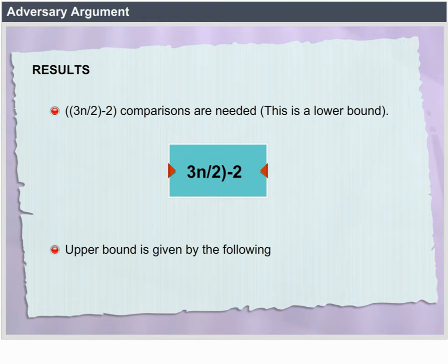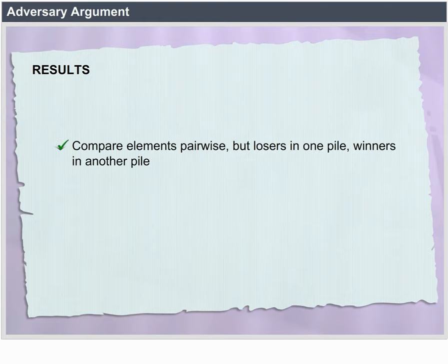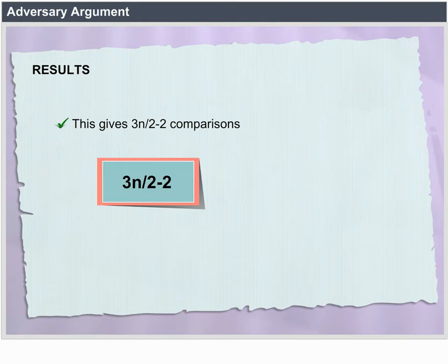The upper bound is given by the following: compare elements pairwise, put losers in one pile and winners in another pile, then find the max of winners and min of losers. This gives 3N/2 − 2 comparisons. The algorithm is optimal.